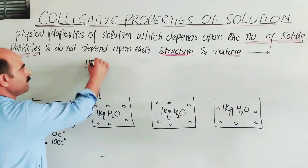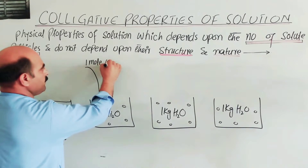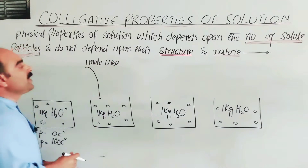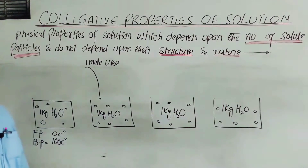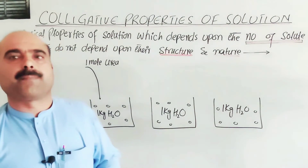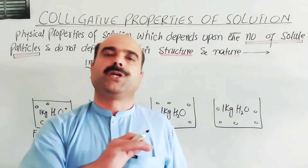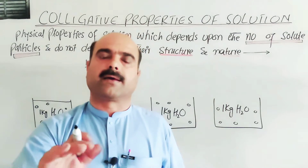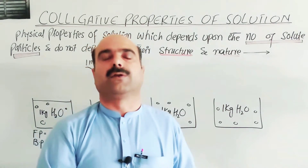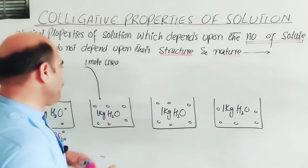We add one mole of urea to the first container. Urea is a non-electrolyte — it does not convert into positive and negative ions in solution. The formula of urea is NH2-CO-NH2. One mole of urea contains 6.023 × 10²³ urea molecules.